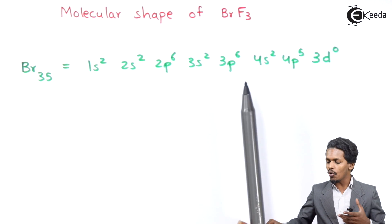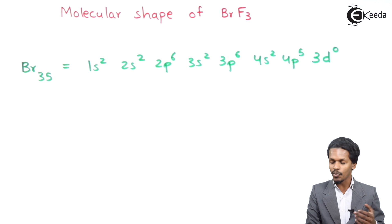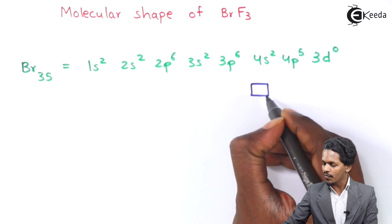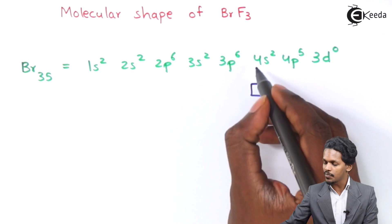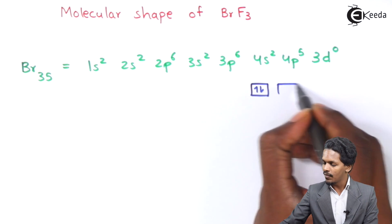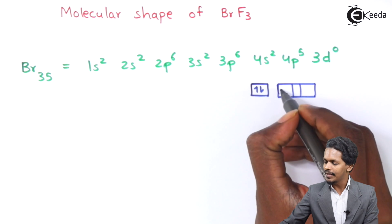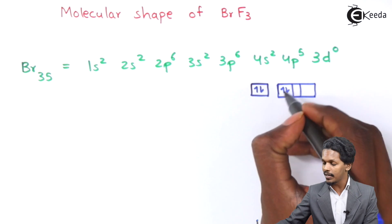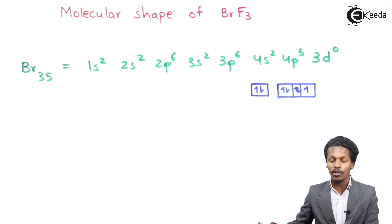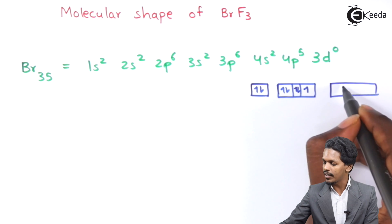In the ground state, the outermost shell — the fourth shell — consists of the s sub-shell with two electrons and the p sub-shell with five electrons: two electrons in px, two electrons in py, and one electron in the pz orbital, while the d orbital has no electrons in it.